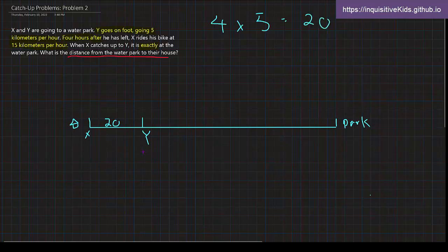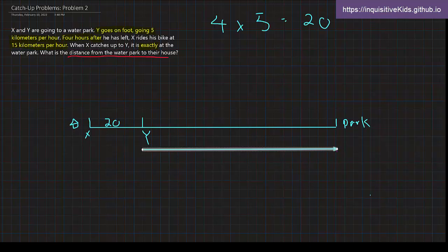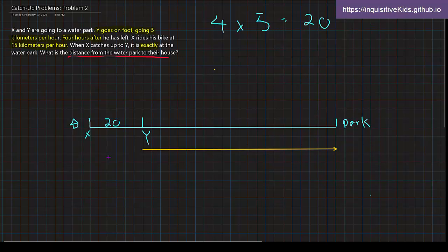So here I'm going to, using this arrow, I will be showing the distance that Y walked in yellow. In pink, yep that's pink, I will be showing the distance that X walked.